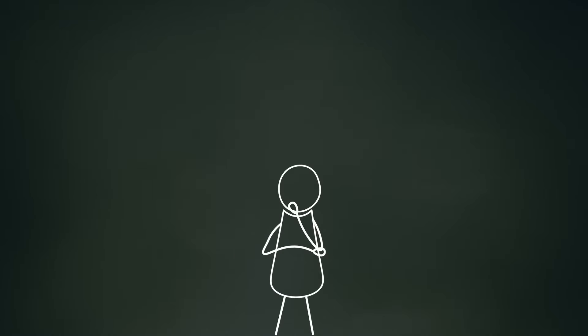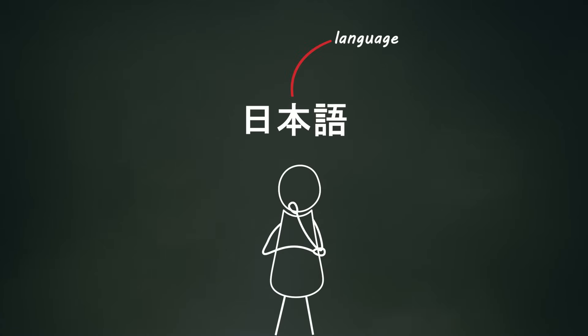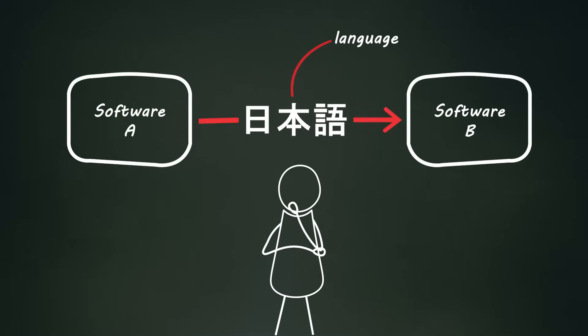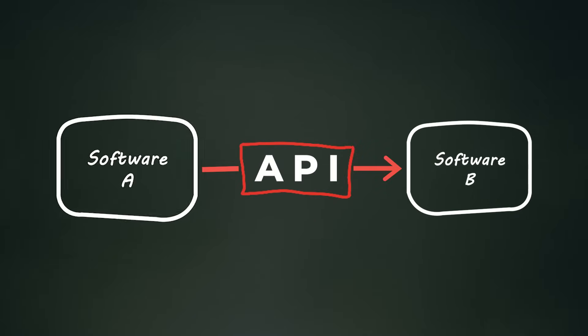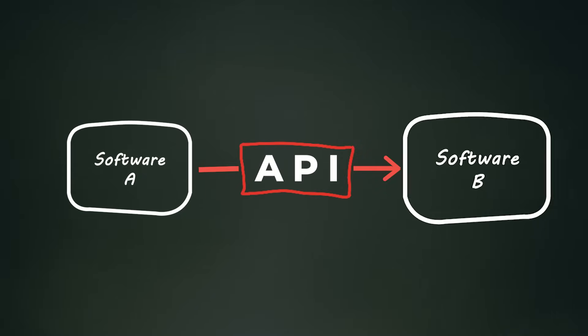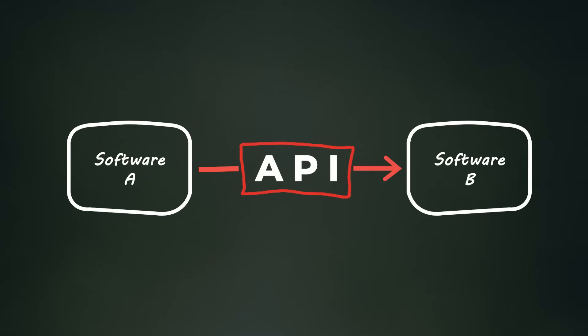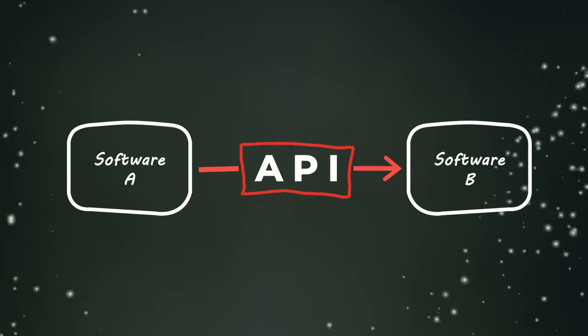Think of it as the language that different software systems use to communicate. It's the bridge that connects one piece of software to another, making them work together just like magic.